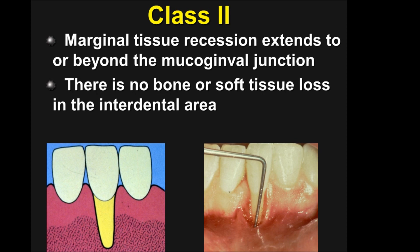Class II recession: marginal tissue recession that extends to or beyond the mucogingival junction. Again, there is no bone or soft tissue loss in the interdental area. The predictability of 100% root coverage in Class I and Class II is well into the 90s and a very predictable procedure.